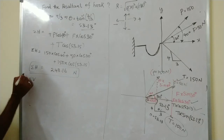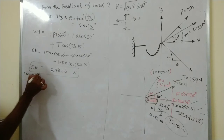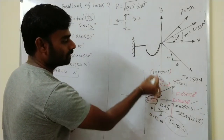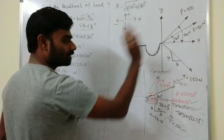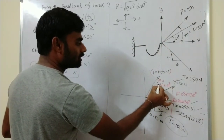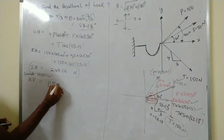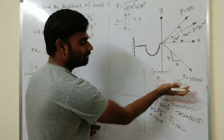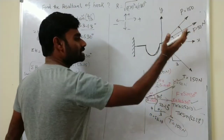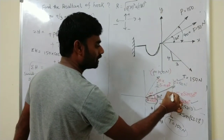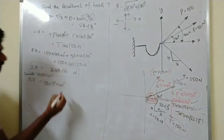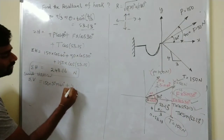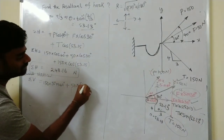Now considering ΣV — the sum of all vertical forces. Force P acts in the right and upward direction, so it is positive: 150 sin 40°. Force F also acts in the right and upward direction, so it is also positive: 50 sin 30°.